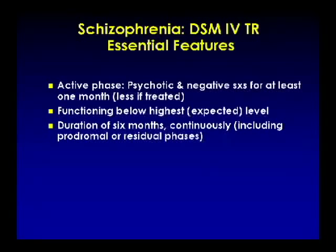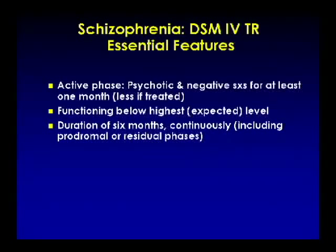The current definition of schizophrenia in DSM-4TR: first, a patient has to fulfill the active phase — a psychotic or negative symptom for at least one month (if not treated). If a patient presents with active phase and successfully responds in less than four weeks, they can still meet the criteria. Second, functioning below their highest expected level — sometimes it's easiest to compare their life trajectory to siblings given their background. And finally, duration of the illness of at least six months; we don't make the diagnosis until a person has been ill or impaired for six months.